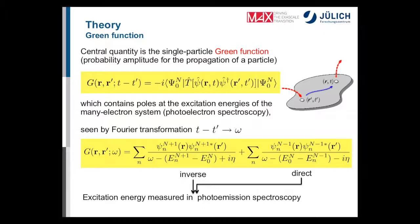The Green function is defined in terms of the many-body interacting ground state and field operators. Physically, it describes the propagation of an additional particle — electron or hole — through the many-body system: you add an electron at some point and time, let it propagate, and take it out again at a later time. Quantum mechanically, you can attribute a probability amplitude to this process, and the Green function is exactly that probability amplitude.